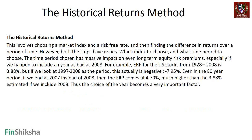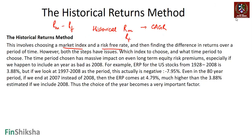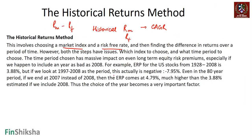Moving to the historical returns method: we calculate RM minus RF by looking at the historical average return on the market — the CAGR or compound annual growth rate over a period — then subtract the risk-free rate to get the equity risk premium. This involves choosing a market index and the risk-free rate and finding the difference over a period of time. Both steps have an issue: which index to choose, and critically, what period to choose.